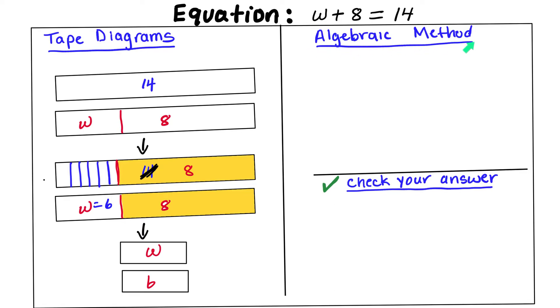We're going to do the algebraic method. We're going to use a tape diagram to represent your algebraic methods using numbers and symbols. Let's go ahead and just copy the equation, w plus 8 equals 14. And we are going to be using, referring to the tape diagram so that we can see how we completed the process.